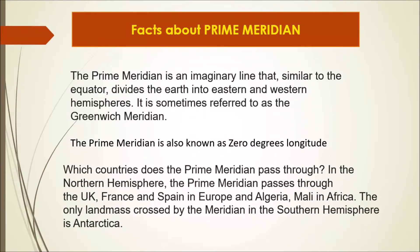Which countries does the prime meridian pass through? In the northern hemisphere, it passes through the UK, France, and Spain in Europe, and Algeria and Mali in Africa. The only landmass it crosses in the southern hemisphere is Antarctica.